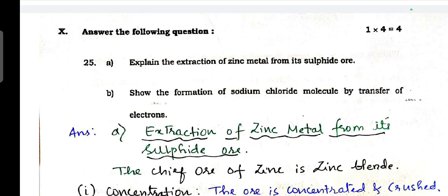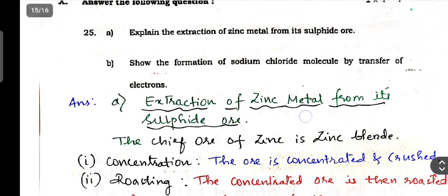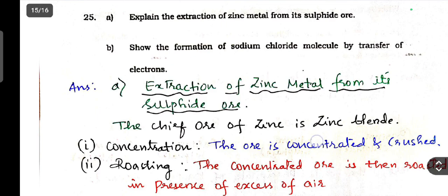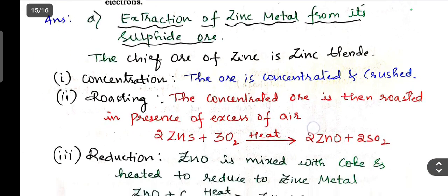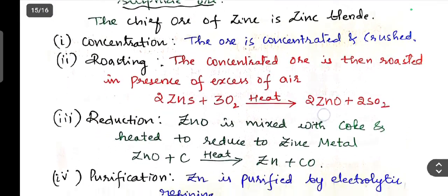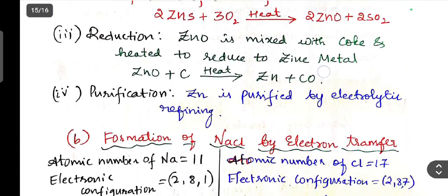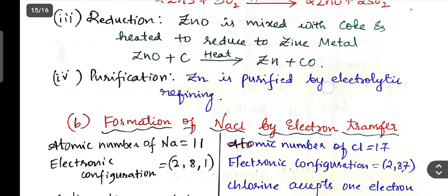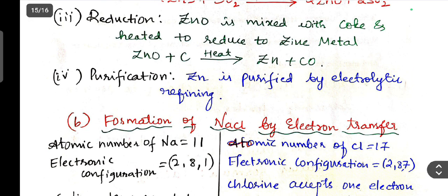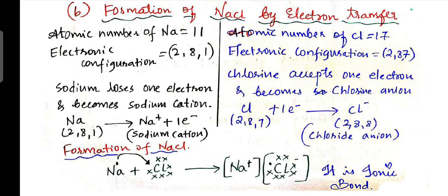Next, four mark question. Explain the extraction of zinc metal from zinc sulfide ore. Show the formation of sodium chloride molecule by transfer of electrons. Formation of zinc metal by electron transfer.